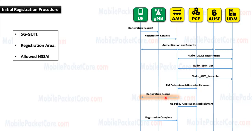Then the AMF sends a registration accept message to the UE. This message includes the 5G GUTI that the AMF assigned to the UE, the registration area that the AMF assigned to the UE, and the allowed NSSAI that the UE is currently registered to.